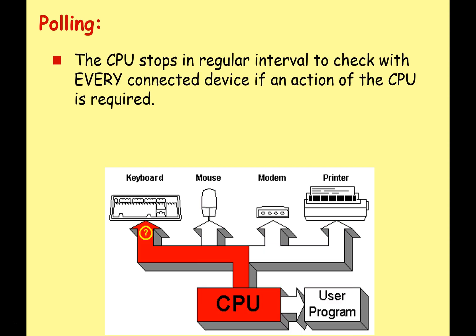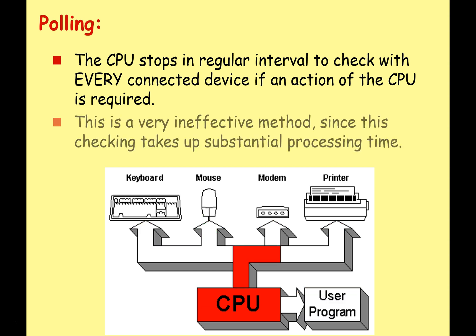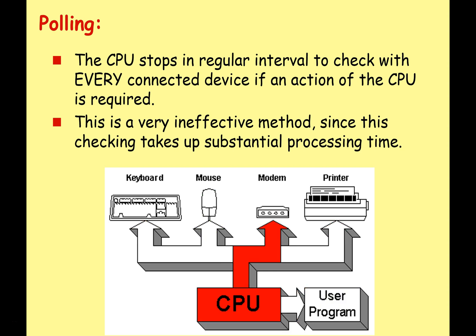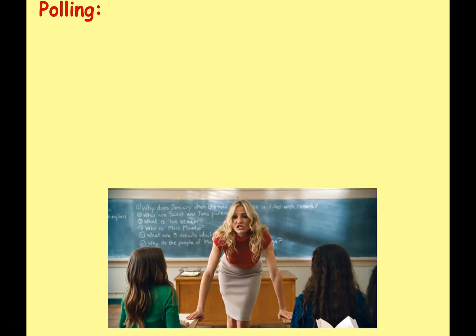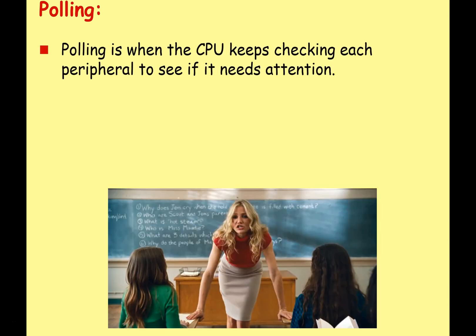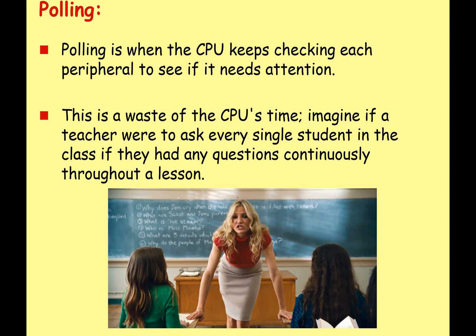We've got a nice animated GIF here just to give you a bit more information. Basically, the CPU stops at a regular interval to check with every connected device if an action of the CPU is required. This is a very inefficient method, since checking each peripheral to see if it needs attention is a waste of the CPU's time. Imagine if a teacher were to ask every single student in the class if they had any questions continuously throughout a lesson — it would waste too much time.